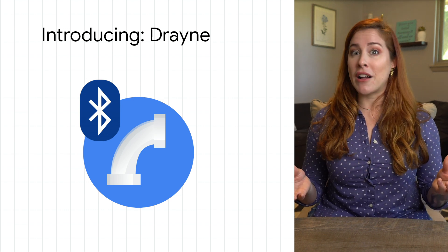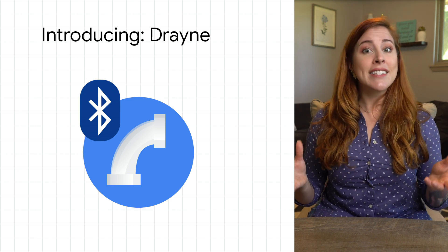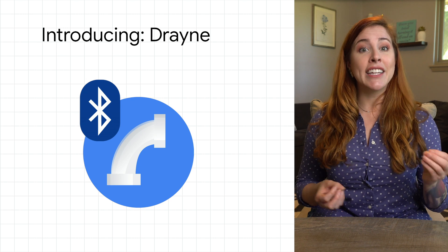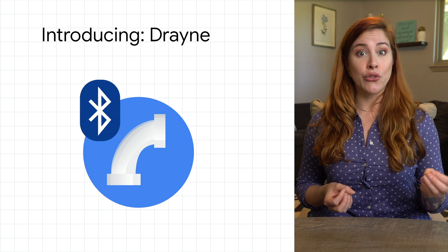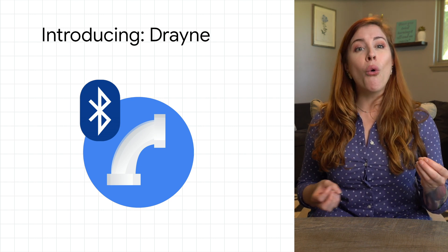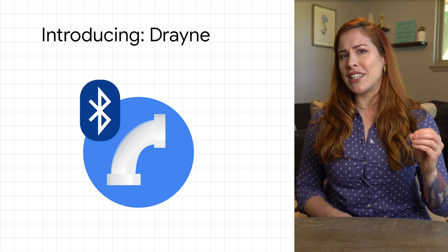You can create a new repository, list existing repositories, and configure access controls through the GCP console or through the GCloud command line tool. Today I'm using GCloud. To find out about setting up the GCloud CLI, check out the guide link below.